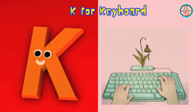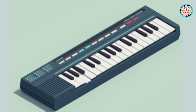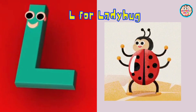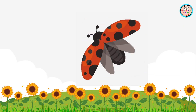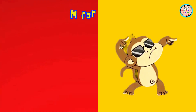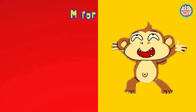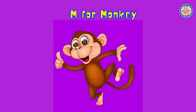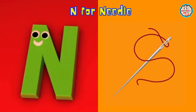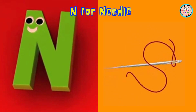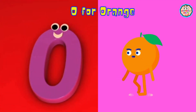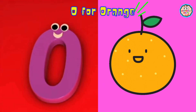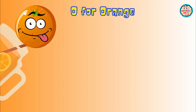K is for Keyboard, K-K-Keyboard, K-Keyboard. L is for Ladybug, Ladybug, L-Ladybug. M is for Monkey, Monkey, M-Monkey. N is for Needle, Needle, N-Needle. O is for Orange, O-Orange.